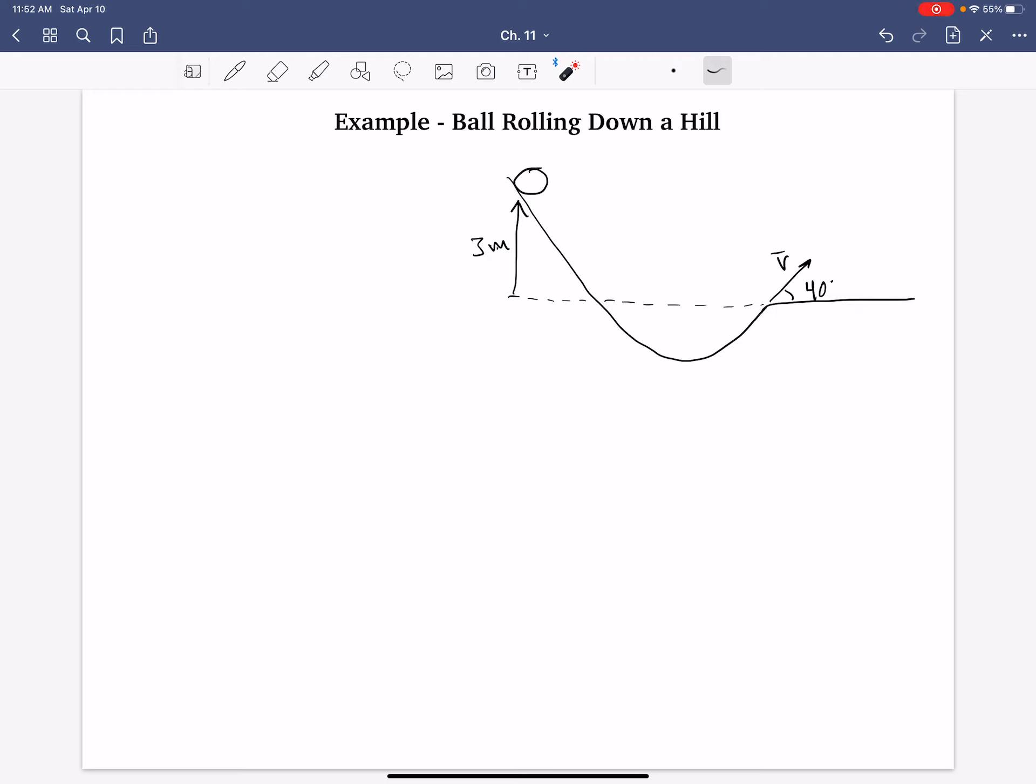such that it lands a horizontal distance that we'll call R away. The problem, ultimately, is to find that horizontal distance R. So it'll roll down, roll up, launch at some angle, and then effectively be a projectile, just like in Chapter 4, and land at some distance from the launch point.